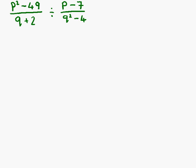This is our sixth and final example. We have p squared minus 49 over q plus 2 divided by p minus 7 over q squared minus 4.